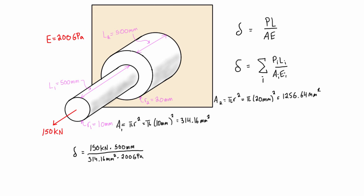Remember that gigapascals is the same as kilonewtons per millimeter squared, so we can swap out the units and cancel them to be left with millimeters — it's just nicer to work with. Then for section two we have 150 kilonewtons times 500 millimeters in the numerator.